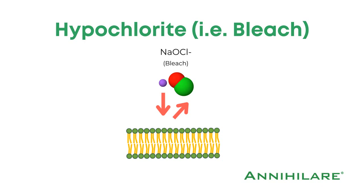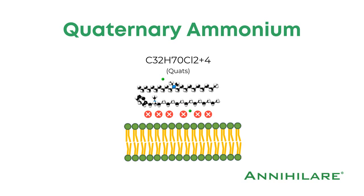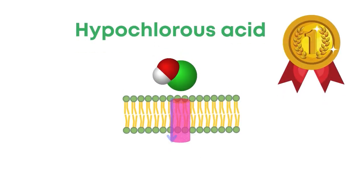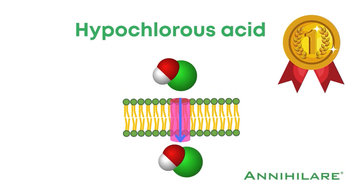In contrast, hypochlorite ions found in traditional bleach solutions have negative charges and will tend to repel, which requires an additional level of concentration to get the same level of efficacy. Large cationic quaternary ammonium compounds simply sit on the outer layer. This makes hypochlorous acid extremely efficient and why it's more effective than traditional bleach.